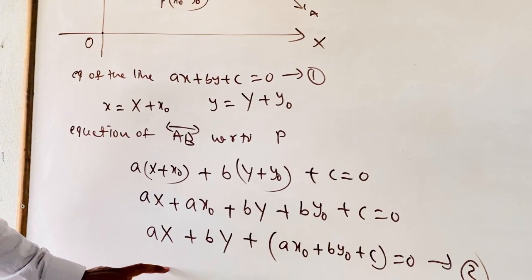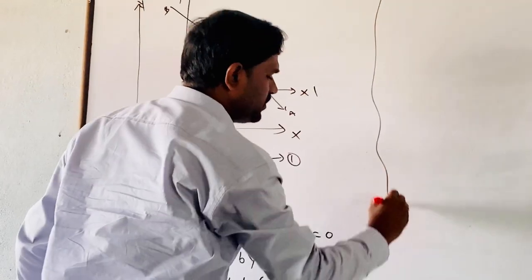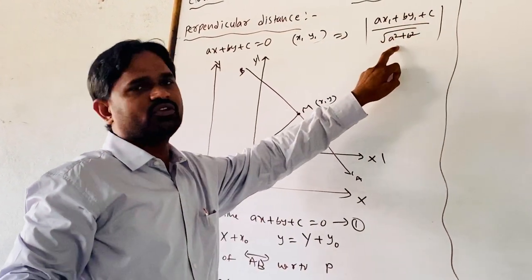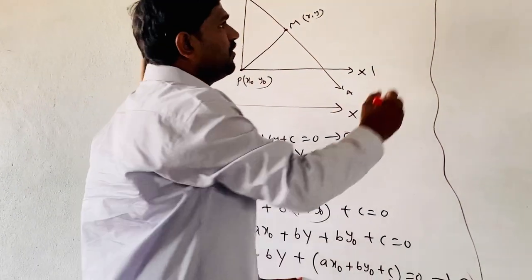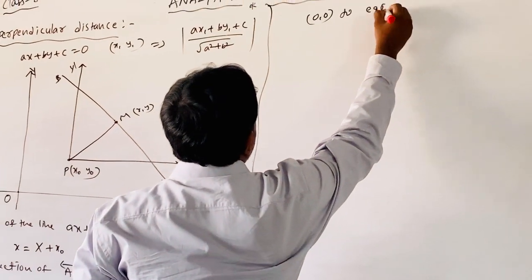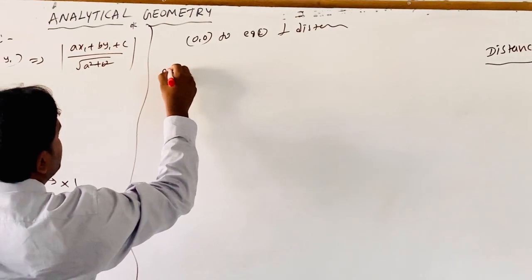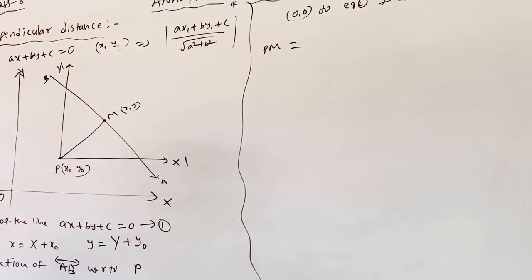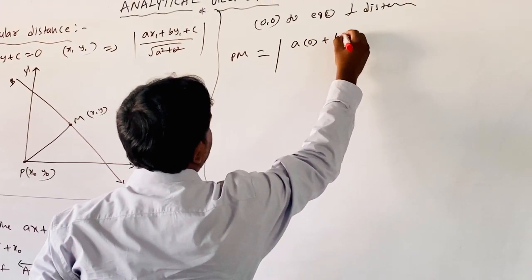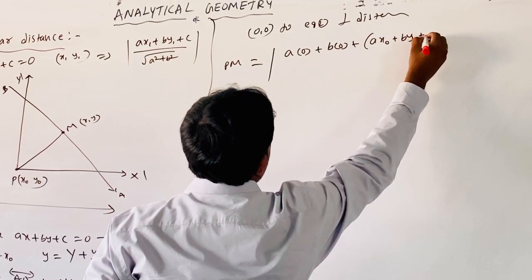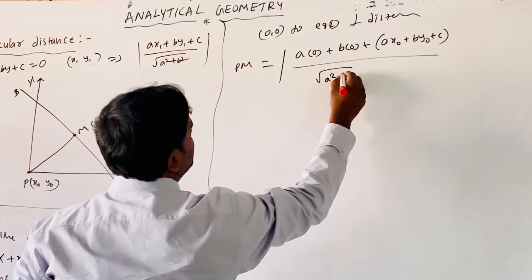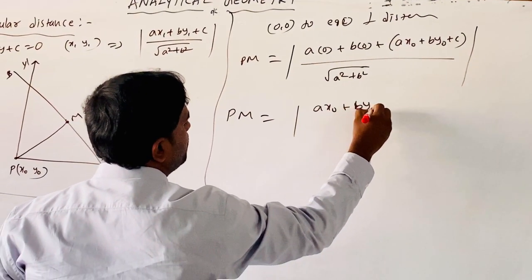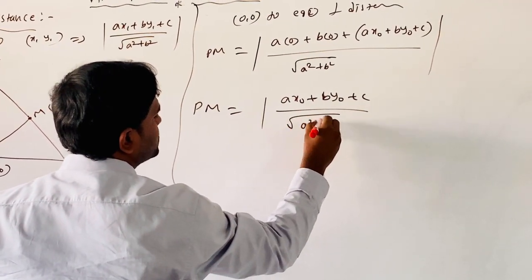We are finding the perpendicular distance from the origin to Equation 2. With respect to the new coordinate system, the X and Y values become 0. So using the perpendicular distance formula, PM equals the modulus of A(0) plus B(0) plus AX naught plus BY naught plus C, divided by square root of A squared plus B squared. Therefore, PM equals (AX naught plus BY naught plus C) divided by square root of A squared plus B squared.